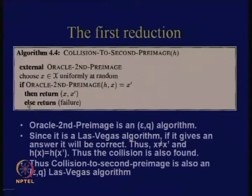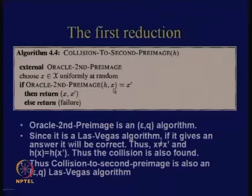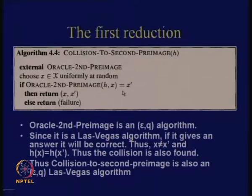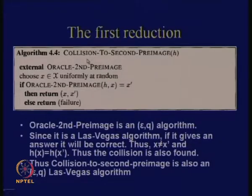One thing we were considering about these reductions — there were some queries about why we put this 'if'. One reason is that this is a probabilistic algorithm, so it does not always give you the answer. This is a Las Vegas randomized algorithm, so it can fail. When this algorithm fails, then the collision to second preimage also fails. This 'if' is only to check whether it actually gives you an answer or not. In the case of a Las Vegas algorithm, there is a probability of it terminating, and that probability is denoted by epsilon. So the probability with which the collision to second preimage gives you a correct answer is also epsilon.